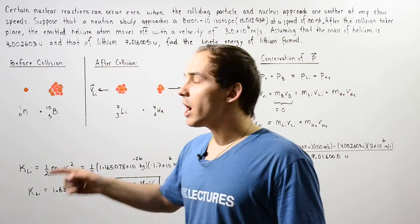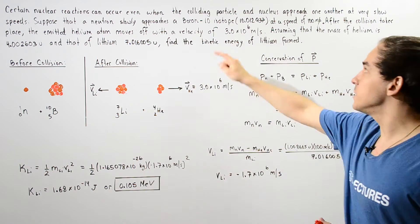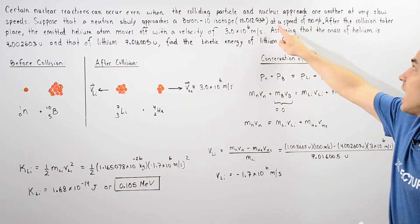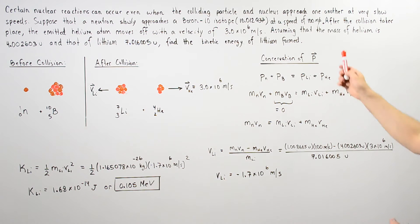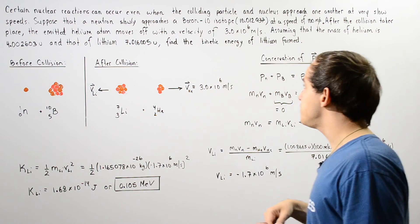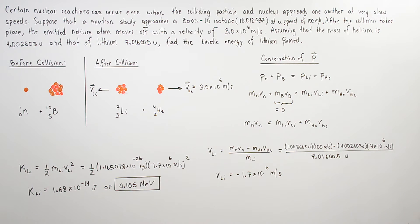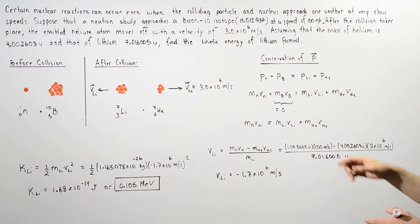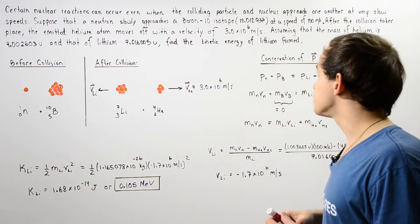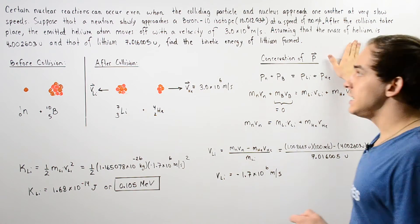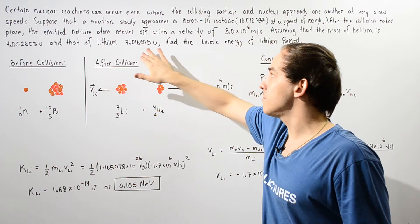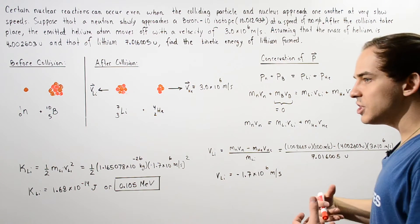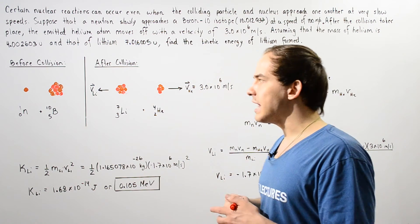Suppose that a neutron slowly approaches a stationary boron-10 isotope at a speed of 100 meters per second — a relatively low speed. After the collision takes place, the emitted helium atom moves off with a velocity of 3 times 10 to the 6 meters per second. Assuming the mass of the helium and the mass of the lithium that is produced are given, find the kinetic energy with which the lithium atom moves away following the collision.